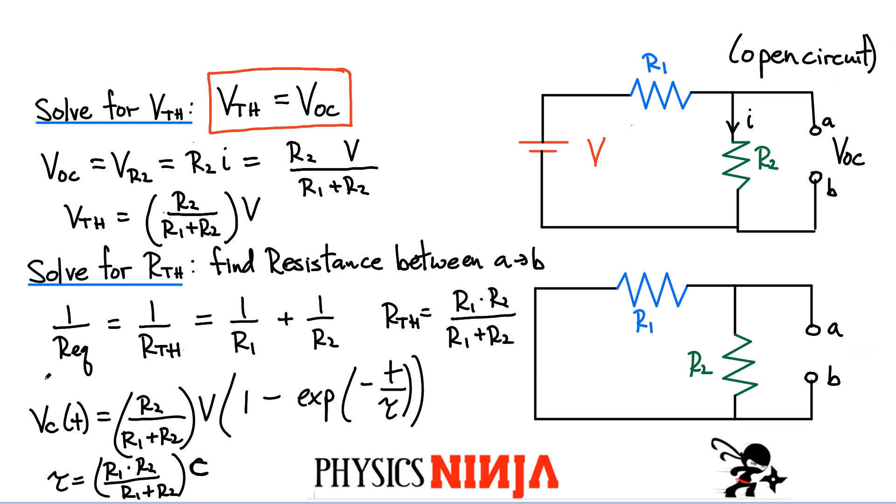All right, so there you have it, folks. You know, in less than a few minutes, we've obtained, actually, the voltage across the capacitor. If you try to solve this here using Kirchhoff's laws, it's going to take you about 30 to 40 minutes. All right, that's it for me, folks.